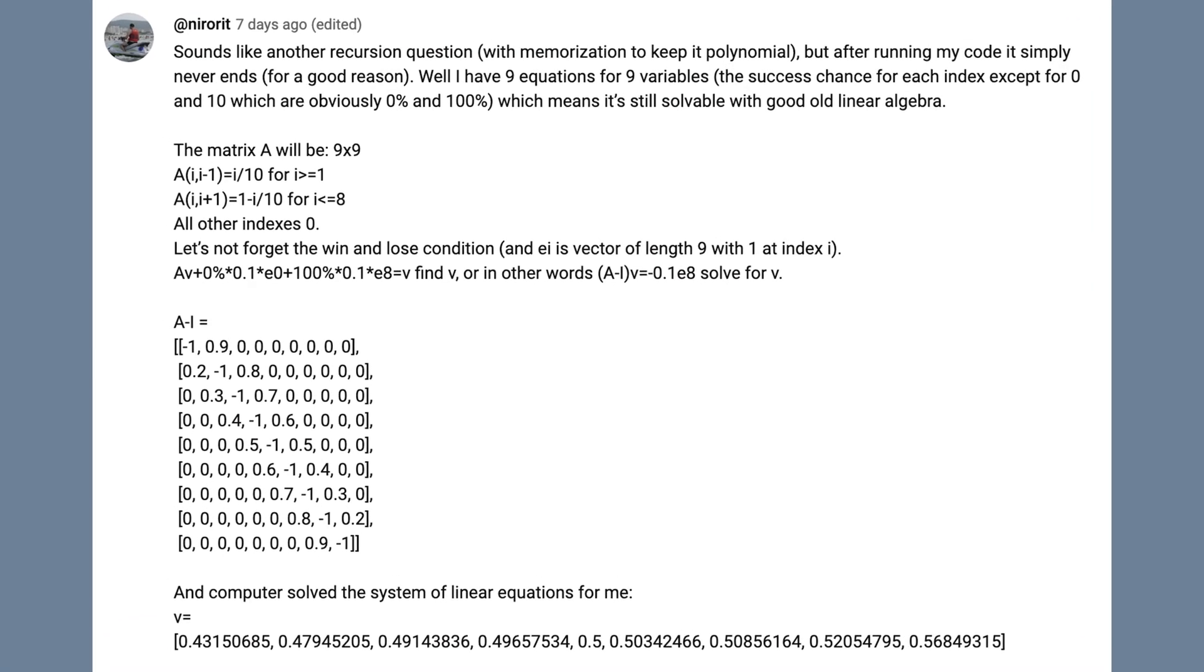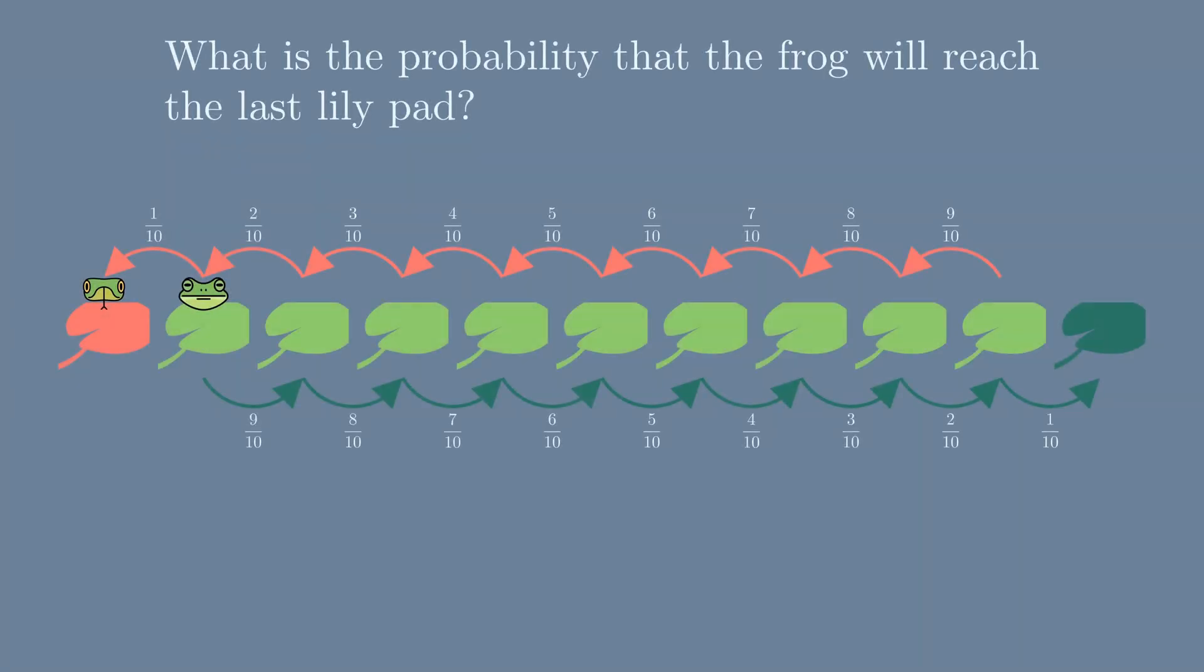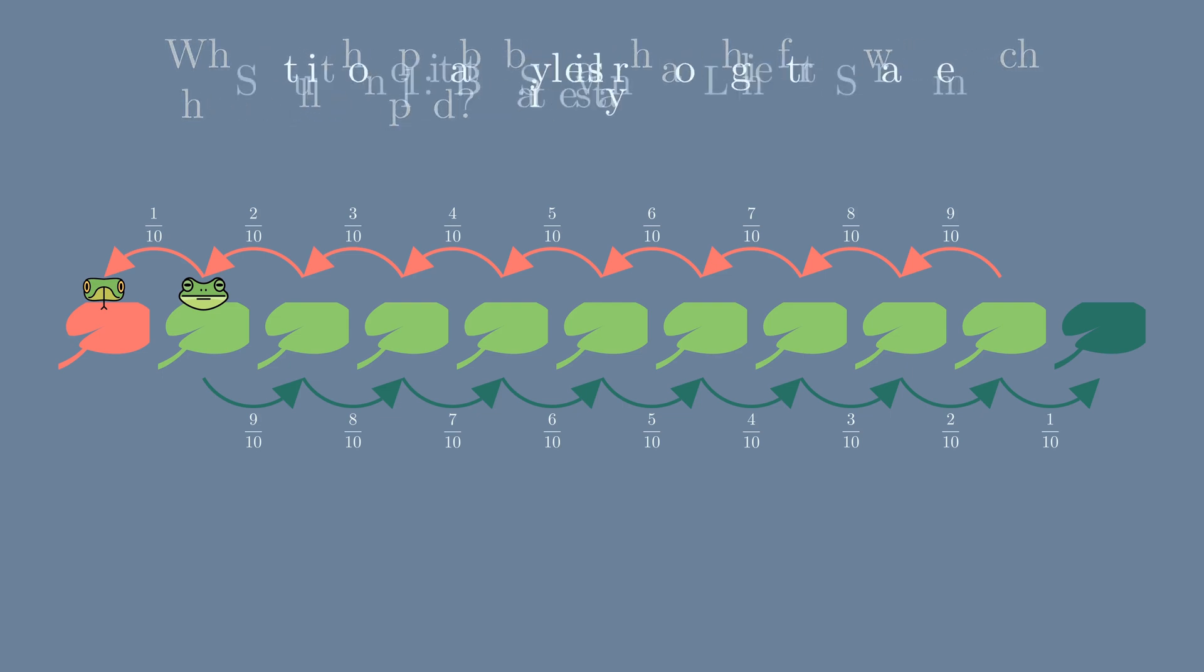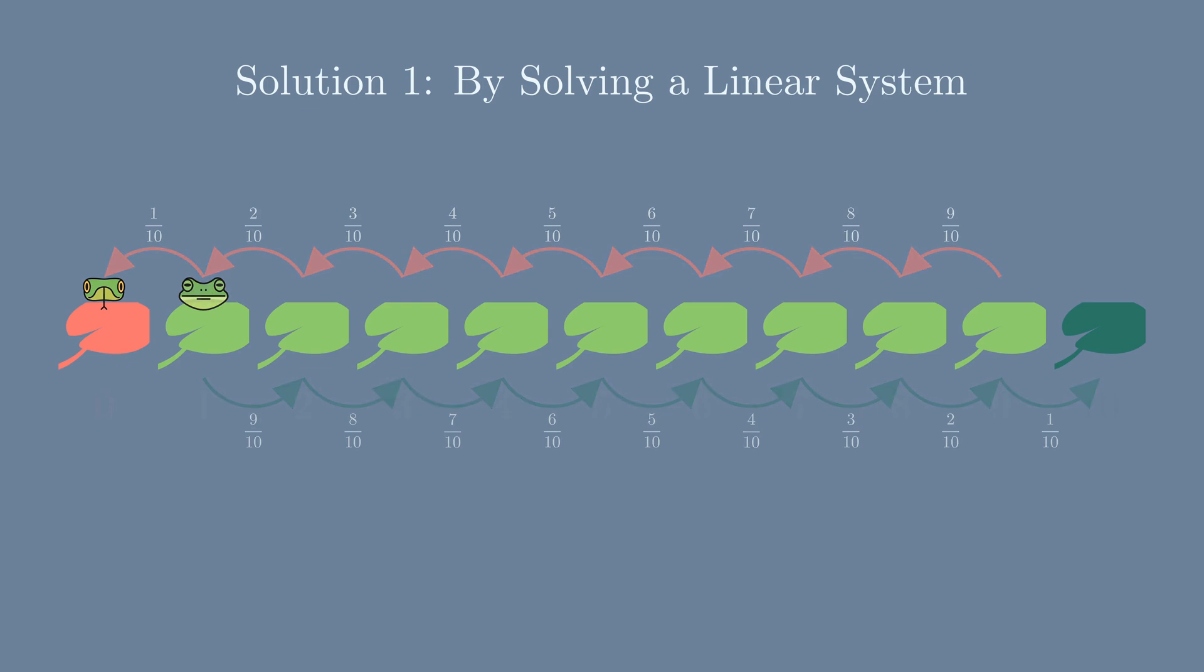The first solution is based on the good old linear algebra. The intuition is that your probability of escaping from any pad should depend on your neighbors because you have to go through your neighbors.